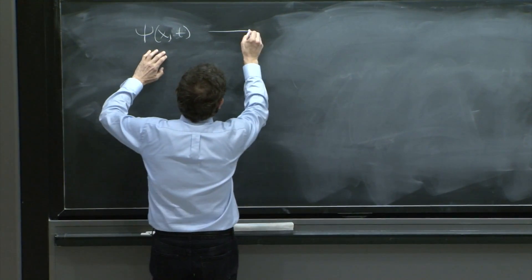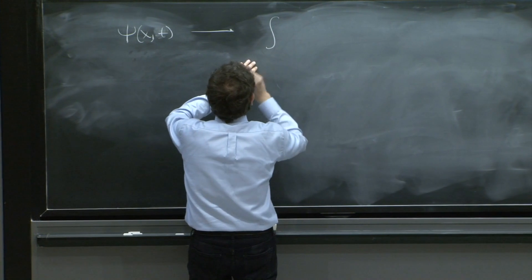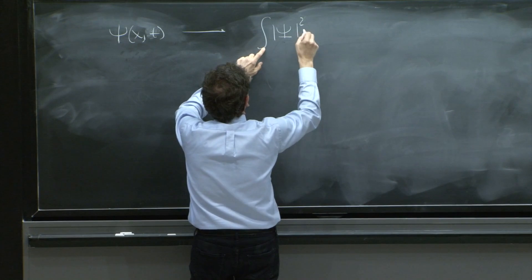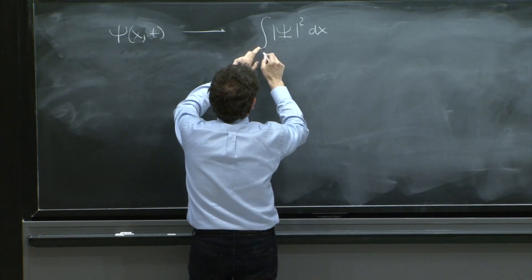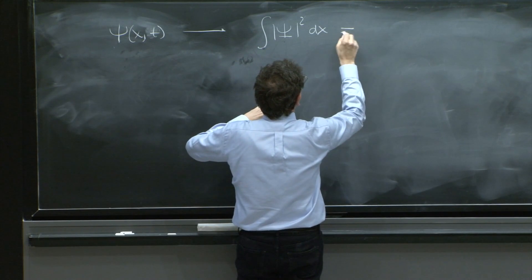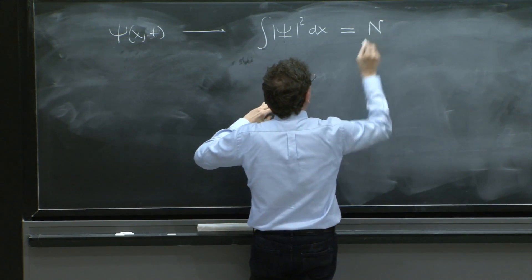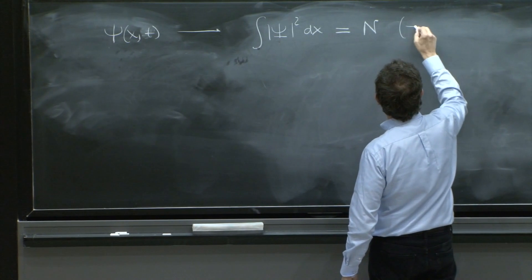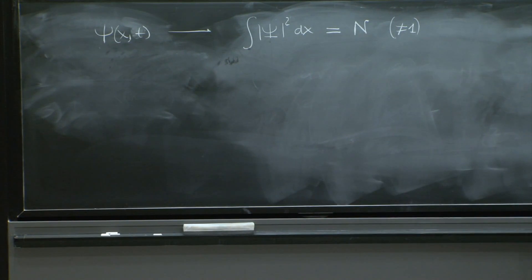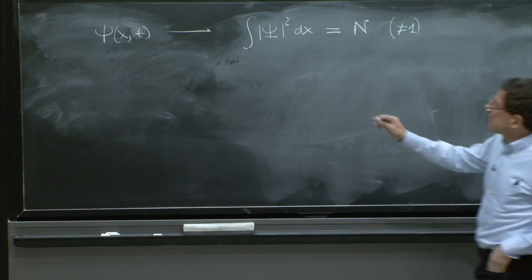Now suppose you go and start doing this integral - integral of psi squared dx - and then you find that it's not equal to 1, but it's equal to some value N, which is different from 1, maybe.